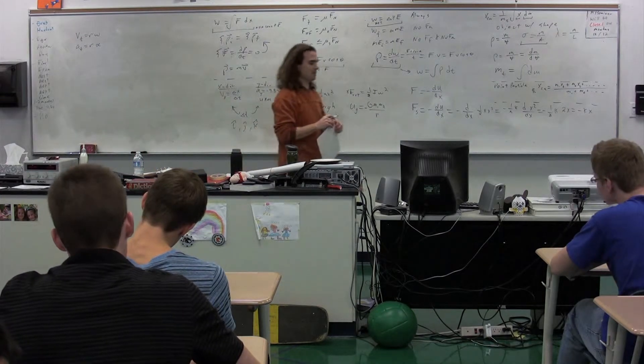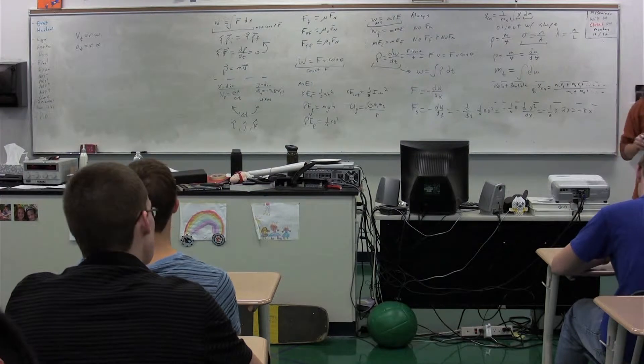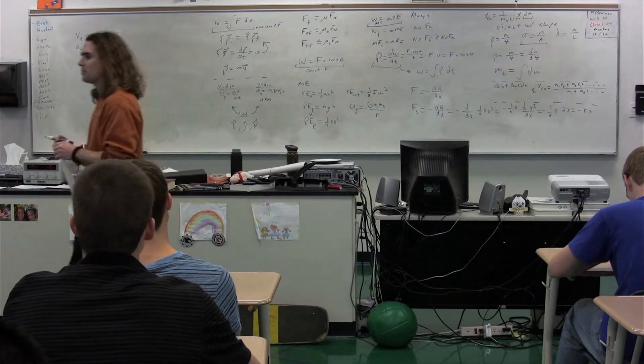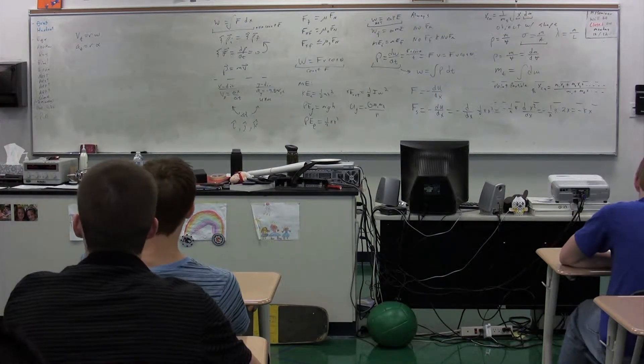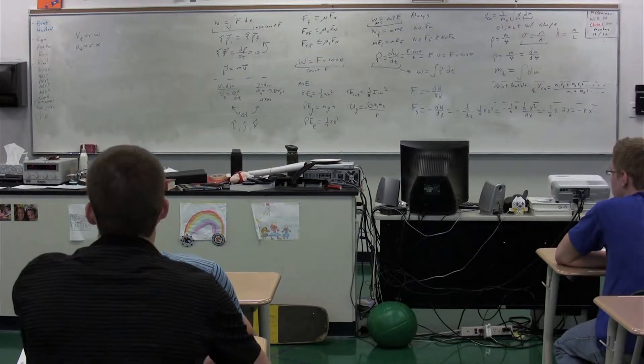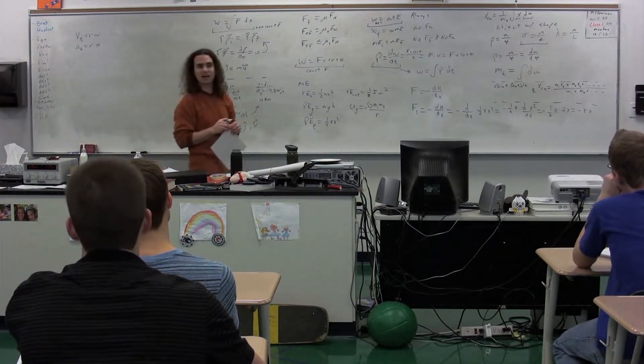Alpha is angular acceleration. Why is it that this equation goes below tangential velocity equals r times omega? Loki. Because it's the derivative. Notice, if you take the derivative of the tangential velocity equals r times omega with respect to time, you get tangential acceleration equals r times alpha.